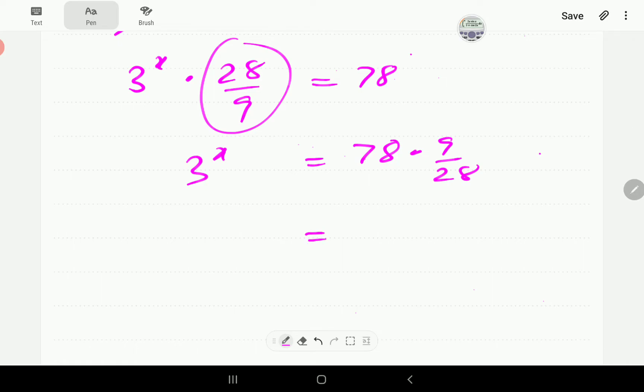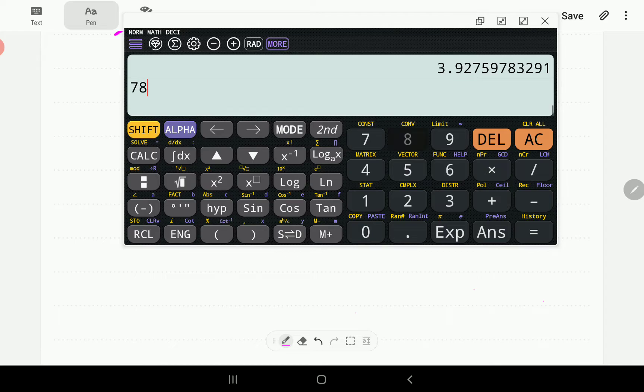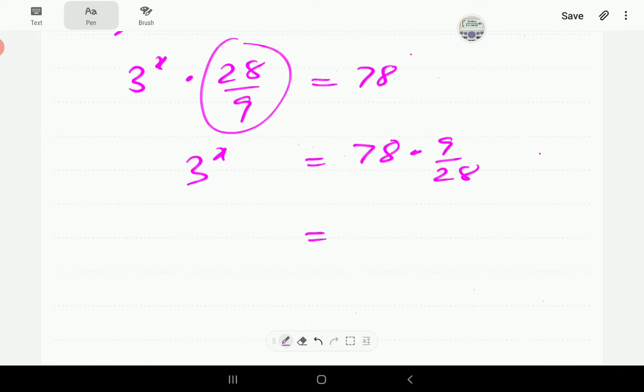It's going to be 78 times 9 over 28. That is 3^x. So 78 times 9 is 702. So this is 702 over 28. So there's a common factor of two. What's 702 over 2. So 2 goes to 7, 3 times to 10. It's going to be 351 over 14.